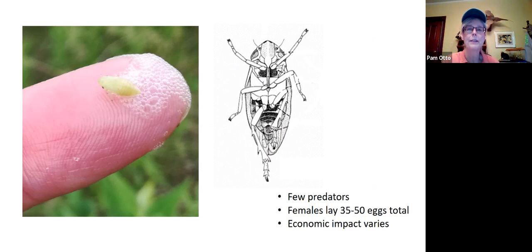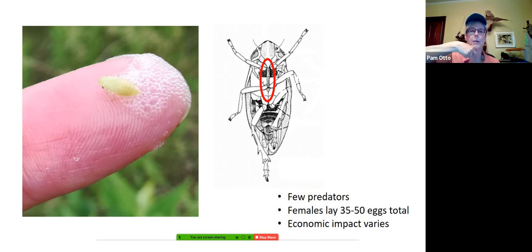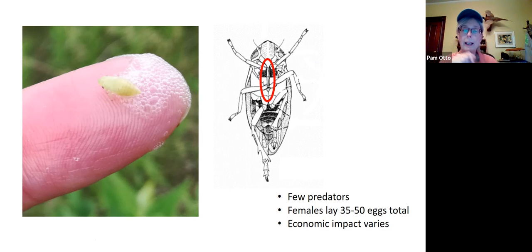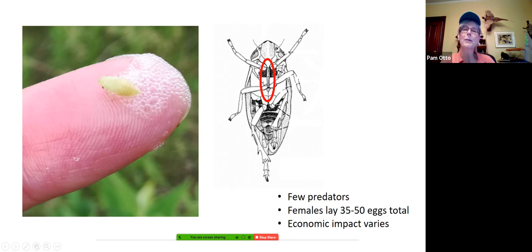Here's what allows them to do what they do — here's that mouthpart. Just like our other true bugs, it folds down against the bottom of the insect and they can swing it out, insert it into the plant tissues, and slurp away. These hind legs work in a churning motion and create the bubbles we see.